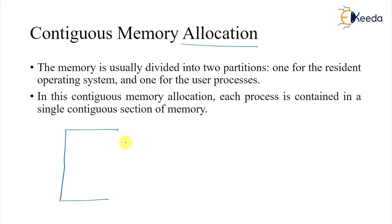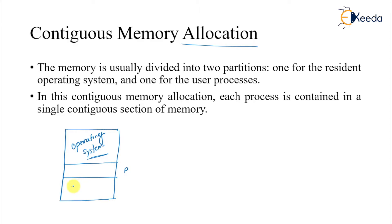The two different partitions are: one partition is for the operating system — the resident operating system — and the other is for the user processes, such as P1 and P2. So in contiguous memory allocation, we have two different partitions: one for the operating system and one for the user programs.